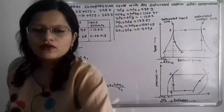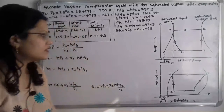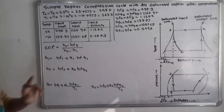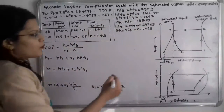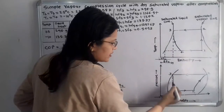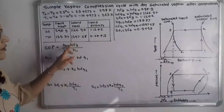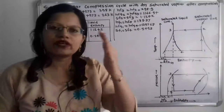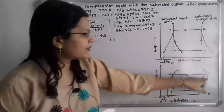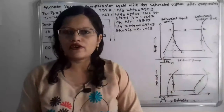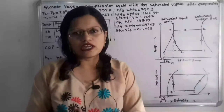The formula for the coefficient of performance is: COP = (H1 − HF3) / (H2 − H1). HF3 is known as 298.9. However, H1 — at point 1, which lies between the saturated liquid and vapor lines — must be calculated. H2 at point 2 on the saturated vapor line also needs to be found.